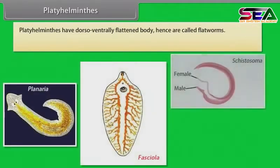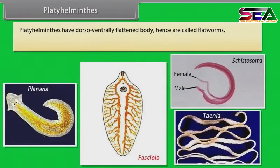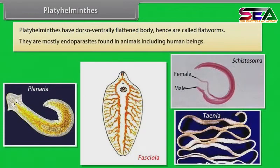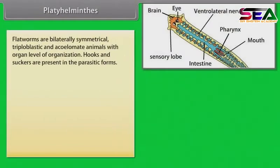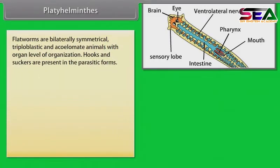Platyhelminthes have a dorso-ventrally flattened body, hence are called flatworms. They are mostly endoparasites found in animals including human beings. Flatworms are bilaterally symmetrical, triploblastic and acoelomate animals with organ level of organization. Hooks and suckers are present in the parasitic forms.